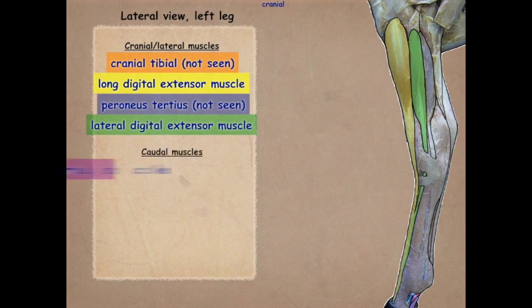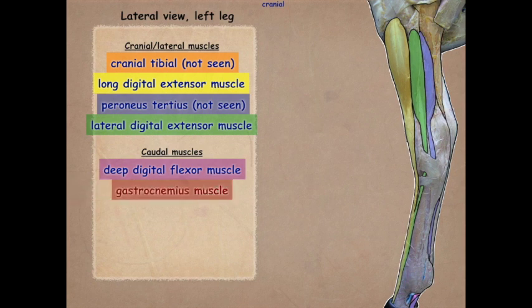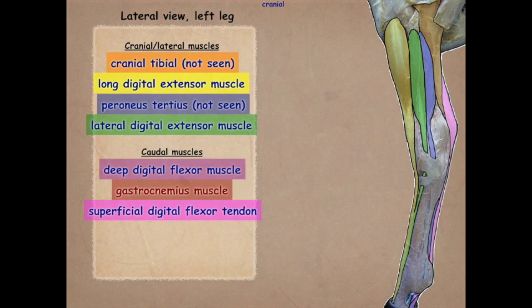The caudal muscles include the deep digital flexor and the gastrocnemius. Remember that the superficial digital flexor belly is hiding underneath the heads of the gastrocnemius. And then the popliteus, of course, is also not seen in this image.